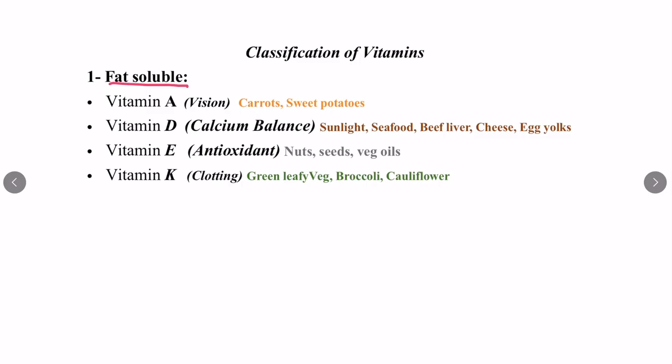Vitamin K acts as a clotting factor, and the sources are green leafy vegetables, broccoli, cauliflower, etc. An easy way to remember fat-soluble vitamins is the mnemonic: vitamin A, vitamin K, vitamin E, and vitamin D — you can think of it as 'a fat kid'. Anyway, you can remember it however you like; it's just four vitamins.